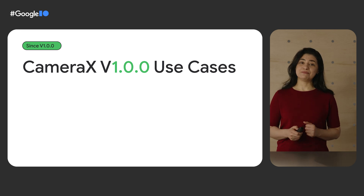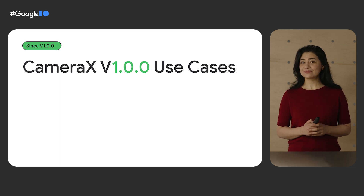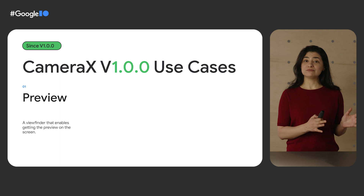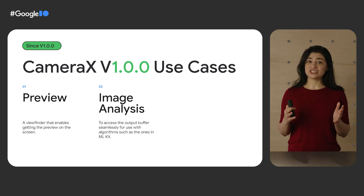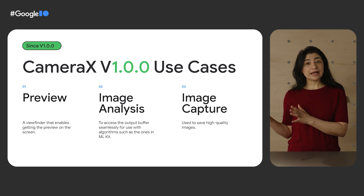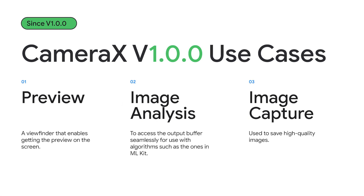Let's quickly recap the main use cases that were launched in CameraX version 1.0. Preview: a viewfinder that enables getting the preview on the screen. Image Analysis: which enables access to the output buffer seamlessly for use with algorithms such as the ones provided in ML Kit. And finally, Capture, which is used to save high quality images. Version 1.0 was packed with many features to support fast development, such as managing the life cycle of the camera and other abstractions while utilizing capabilities that made image capture easy to implement.